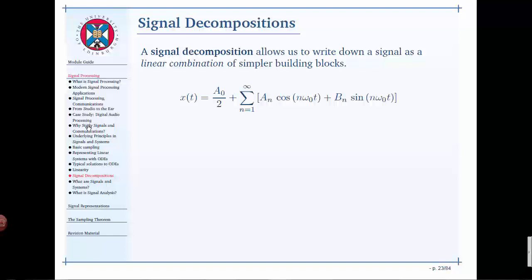So here I've got a Fourier series. x(t) is a DC value plus an infinite combination of cosines and sines at multiples of omega nought.